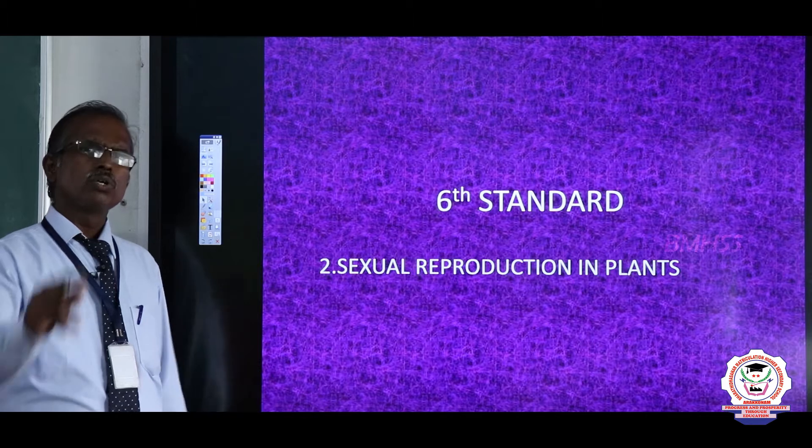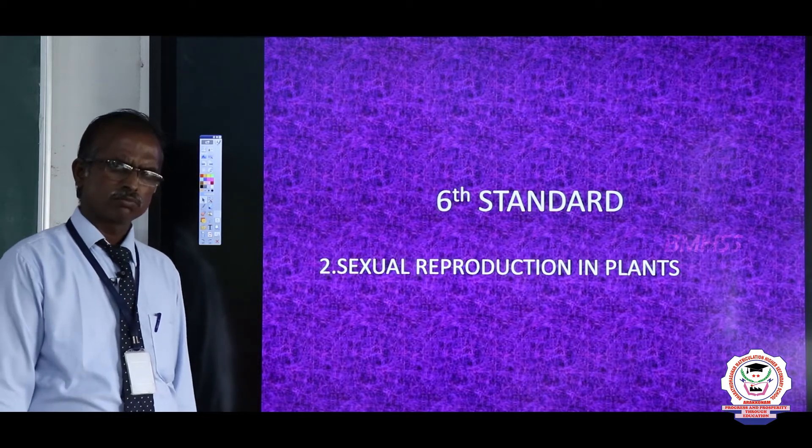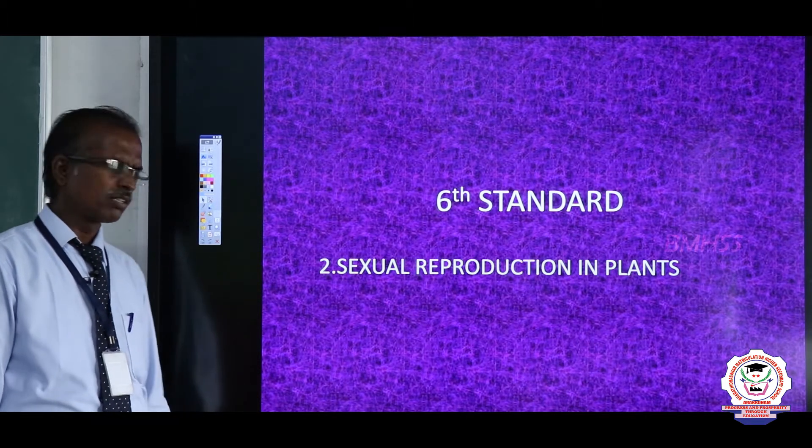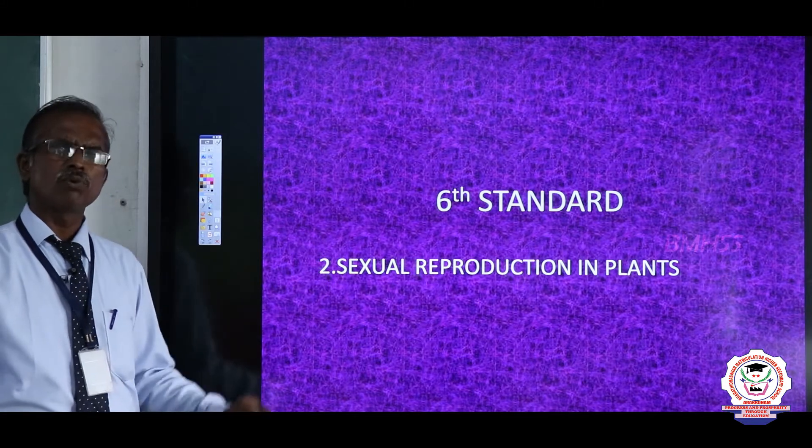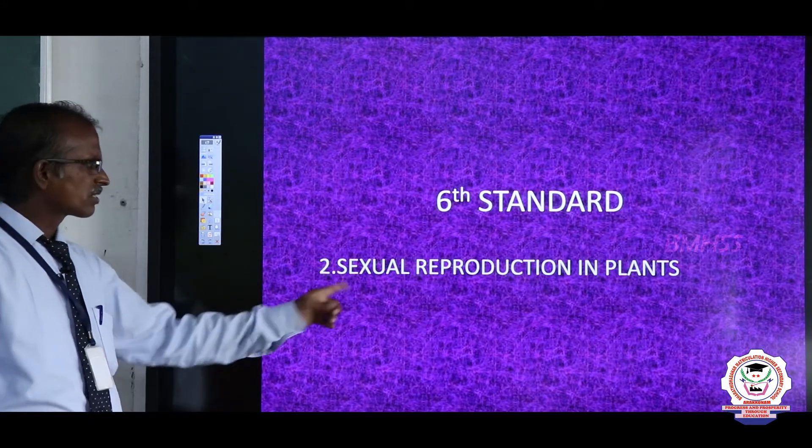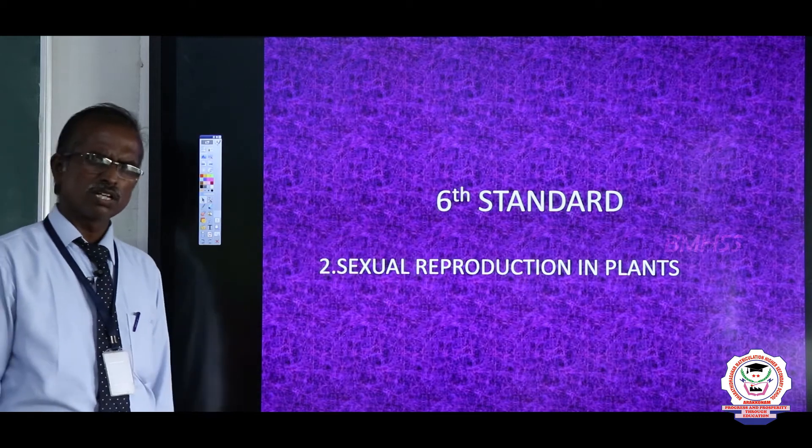In this case, two parents are involved. This sexual reproduction in Tamil, we call polyen opirukkum. Sex organs are involved.